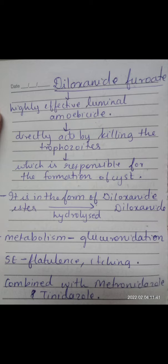The next point is that it is in the form of the diloxanide ester, which is hydrolyzed and gives diloxanide. So we can say that it is a type of prodrug. It is then metabolized by glucuronidation.